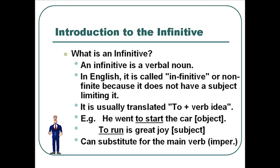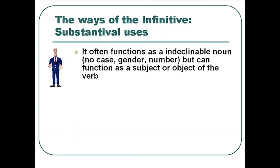So 'blepō' becomes 'to see,' and 'erchomai' will be 'to come' or 'to go,' rather than 'I come' or 'I go.' Because the infinitive is a verbal noun, it'll function sometimes as a verbal substitute — especially for the imperative — and it will also function as a substantival. There'll be substantival usages, just as with the participle, only different for the infinitive, and there will also be adverbial usages.